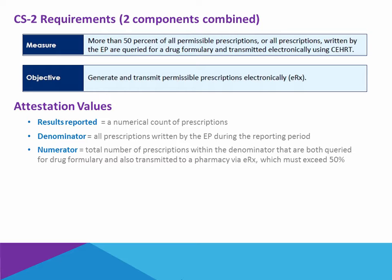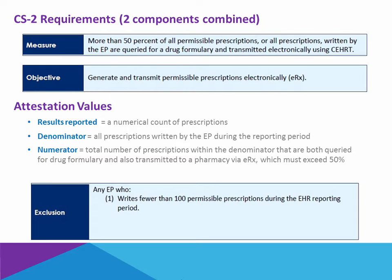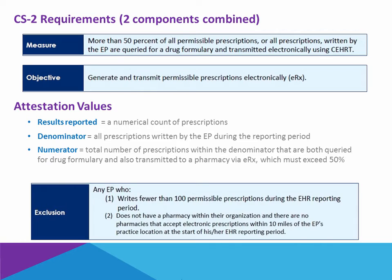The numerator must exceed 50 percent. There are two exclusions available to providers for Core Set 2. The first is for any provider who writes fewer than 100 permissible prescriptions during the reporting period — for example, a chiropractor or ophthalmologist who doesn't write many prescriptions. The second exclusion applies if there is no internal pharmacy within your clinic or no pharmacies within 10 miles of your physical location that accept electronic prescriptions.